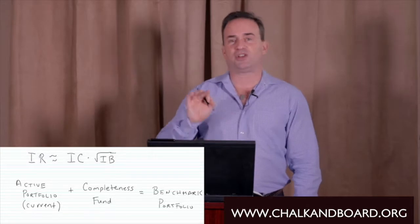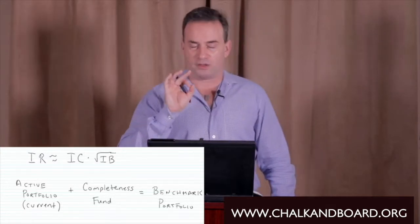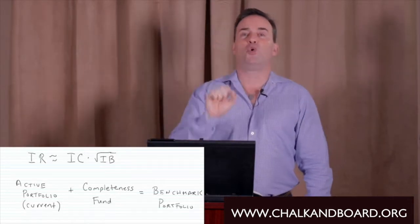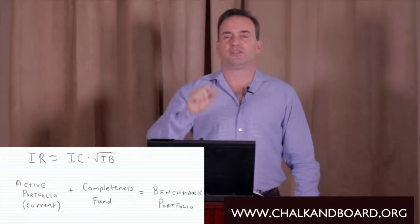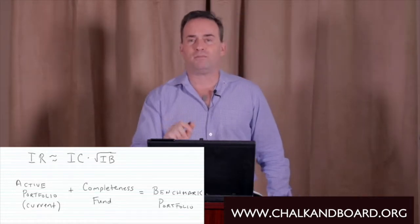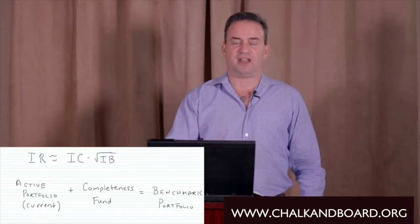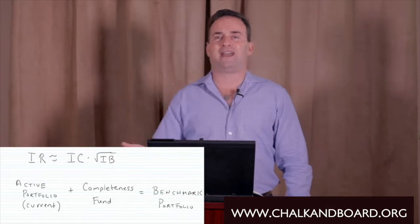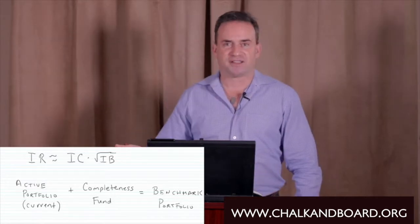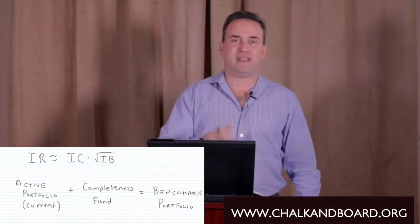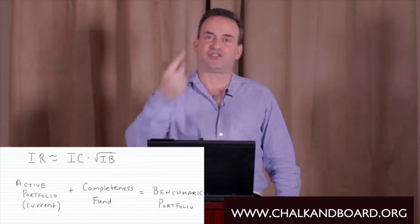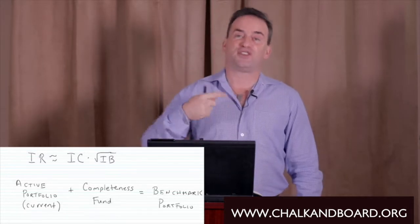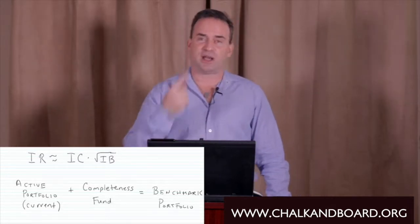We take that information coefficient and multiply it by the square root of the investor breadth. The investor breadth is the number of pure, independent investment decisions that the portfolio manager makes. For example, if our portfolio manager selects 15 utility stocks for the portfolio, that is not considered to be 15 independent decisions — it's actually considered one independent decision, because it's all based on the same thing: utility stocks, probably using the same information.